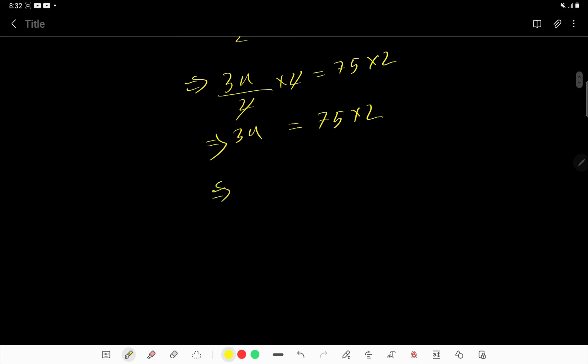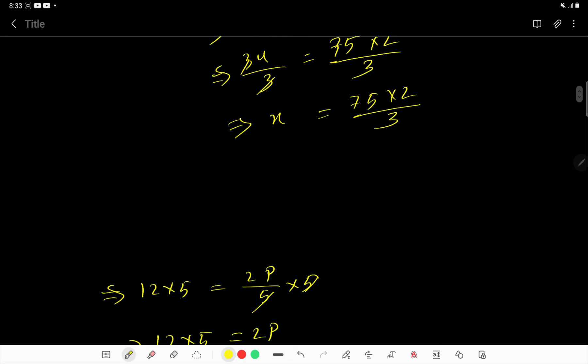If I divide both sides by 3, then what will happen? This 3 cancels each other, so we are getting x, then 75 times 2 divided by 3. Now divide this 75 by 3, so we will get 25. So 25 times 2, that is 50.